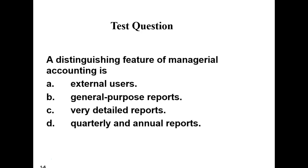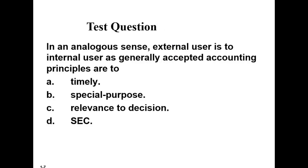Quiz question: A distinguishing feature of managerial accounting is — A) external users, B) general purpose reports, C) very detailed reports, or D) quarterly and annual reports. The answer is C — very detailed reports. It's not external users because financial accounting is for external users; managerial accounting is for internal users. General purpose reports belong to financial accounting. Managerial accounting produces very detailed, special-purpose reports.